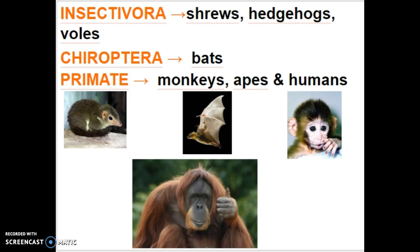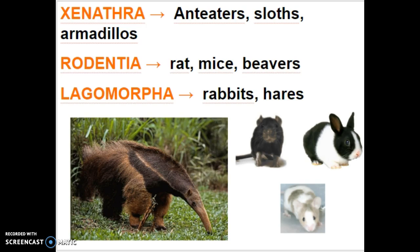Class Insectivora are the insect eaters — shrews, hedgehogs, and voles. Class Chiroptera: the suffix in Latin means wing, so these are our winged mammals, the bats. Class Primata includes monkeys, apes, and ourselves. Class Xenothra includes anteaters, two and three-toed sloths, as well as armadillos.